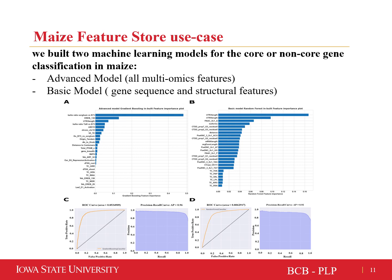We built two models utilizing the Maize Feature Store omics dataset: an advanced model trained using all generated omics features, and a more generic basic model trained using just the sequence or gene structural features, as these are easily obtained for any gene model. Overall, both models had decent performance, but the advanced model outperformed the basic model, exhibiting an accuracy of around 89%. Both extrinsic and intrinsic features contributed substantially to core or non-core gene predictions. The top 25 omics features most predictive of classifying a gene as core or non-core for both models are displayed in figures A and B, while figures C and D exhibit the prediction performance of the advanced and basic models respectively.